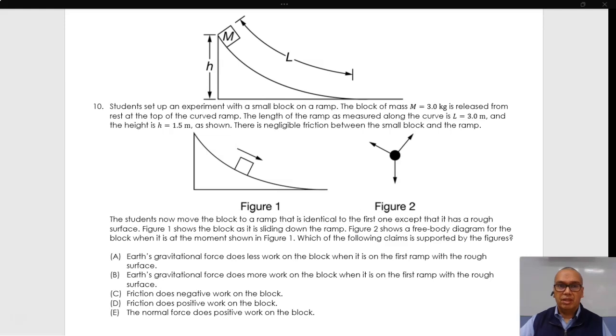10. Students set up an experiment with a small block on a ramp. The block of mass m equals 3 kg is released from rest at the top of the curved ramp.